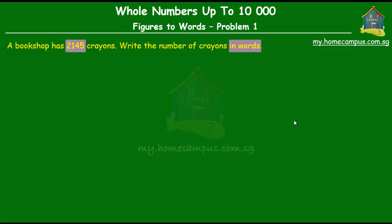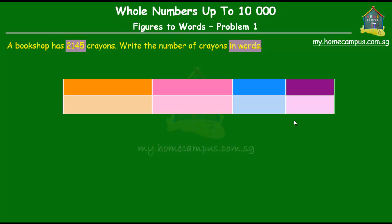Alright, so what we do first is we bring up our place value chart that has the ones, the tens, the hundreds, and the thousands in it.